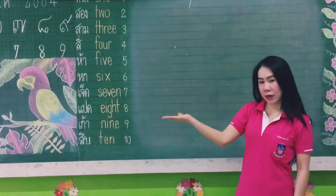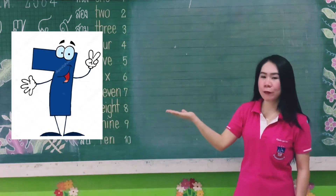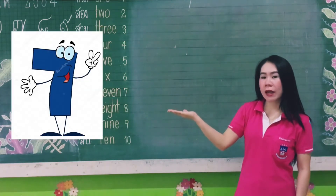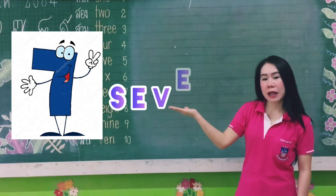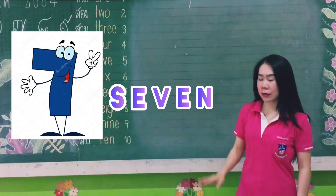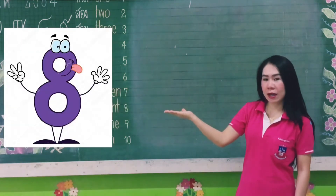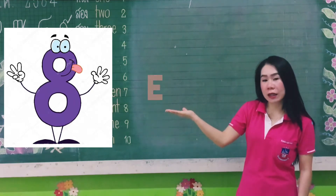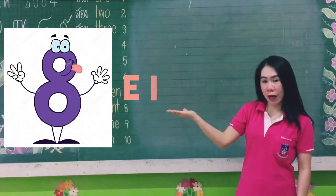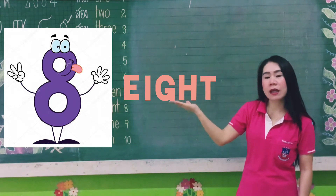Next we have is 7. Say 7. Now let's spell S-E-V-E-N. 7. Now this is number 8. Say 8. Now let's spell E-I-G-H-T. 8.